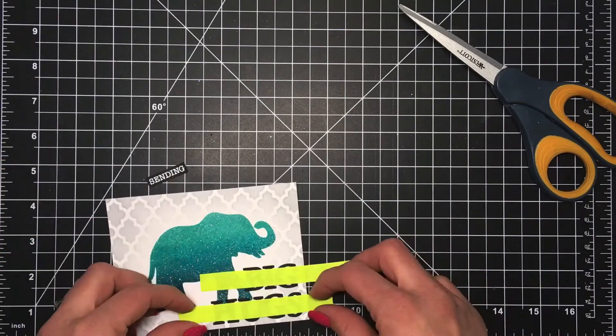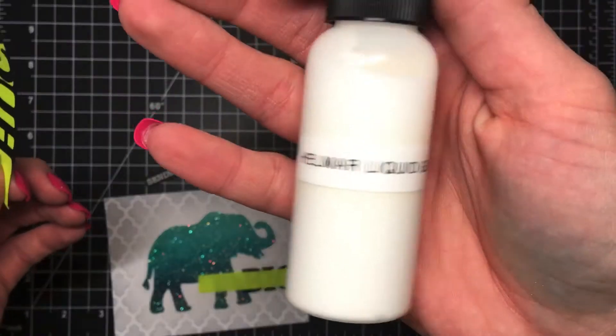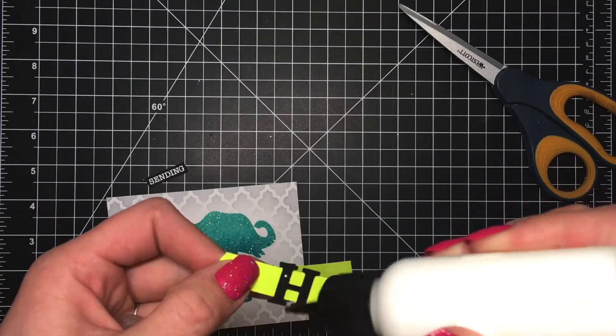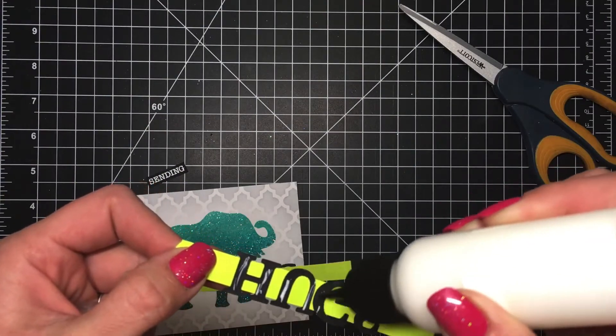Then I will come in with some Helmar liquid adhesive and place that all over the back of these die cuts and then adhere those down onto the card panel.